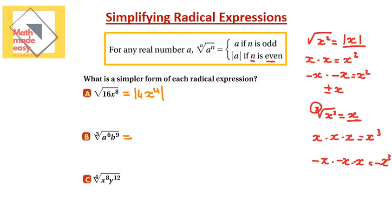Next question: the cubic root of a to the power of 6 times b to the power of 9. The cubic root of a⁶ is a squared, and the cubic root of b⁹ is b cubed. If this isn't obvious, you're effectively dividing the exponents by the index: 6 ÷ 3 = 2 and 9 ÷ 3 = 3. Because the index is odd, there is only one solution, so the answer is a squared times b cubed — no absolute value needed.